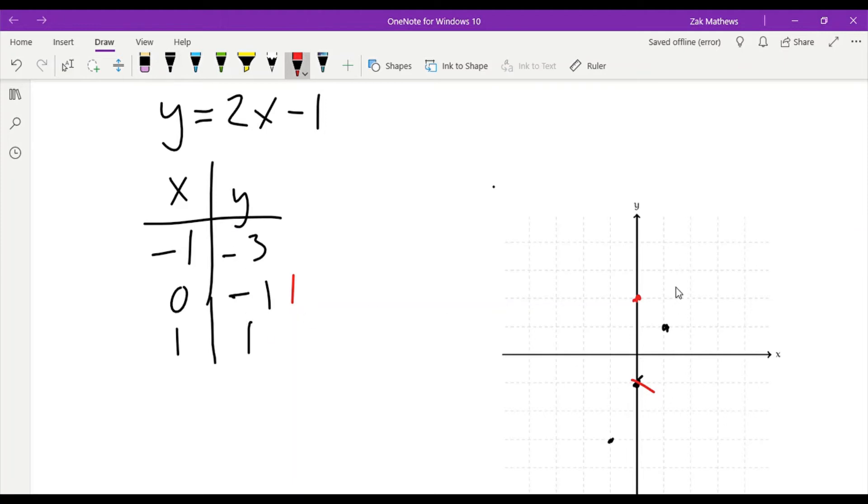Now I just need to connect my dots, and I'm going to do this with a straight line. And so there is the graph of my equation y equals 2x minus 1.